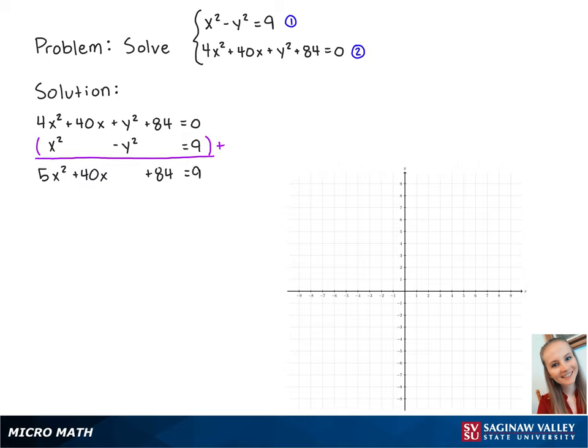To solve for x, we want to get the right side equal to 0, so we're going to subtract 9 from both sides, so that we get 5x squared plus 40x plus 75 equals 0. To make this easier, we're going to divide both sides by 5, so that we have x squared plus 8x plus 15 equals 0.